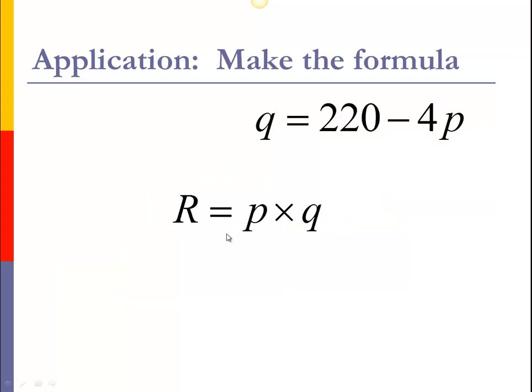And so when we put those two together, what we want to do is get rid of one of the variables. So when we have revenue equals price times quantity, what I'd like to do is get rid of either the Q or P. Now since this question was asking what is the price that gives us the maximum revenue, what I want to do then is get rid of the Q.